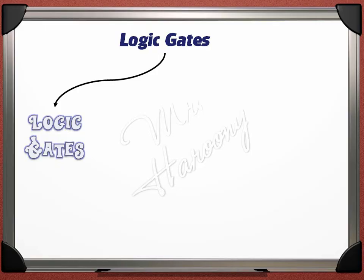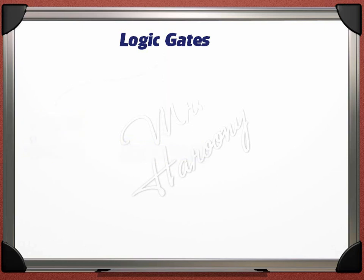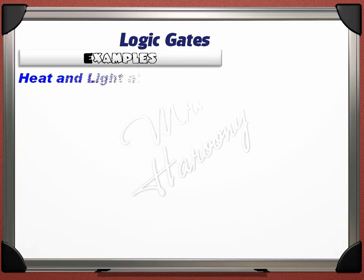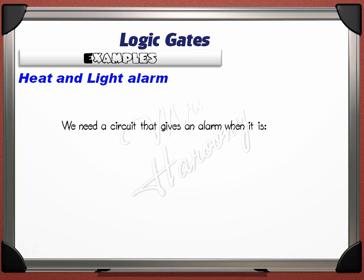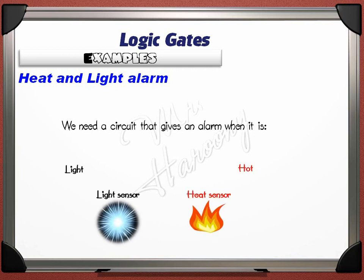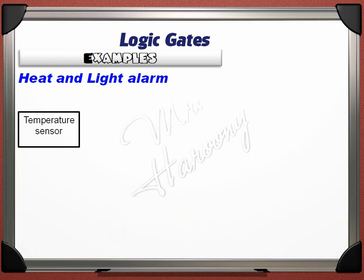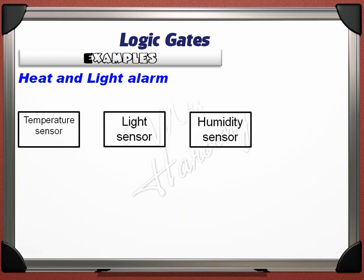Here we have two simple examples on the use of logic gates in alarms. The first is the heat and light alarm — a circuit that gives an alarm when it is hot and bright. There are many sensors used to detect environmental factors. A temperature sensor gives a 1 (ON) signal if the surroundings are hot and 0 (OFF) if cold. A light sensor gives 1 if light intensity is high and 0 if dark.